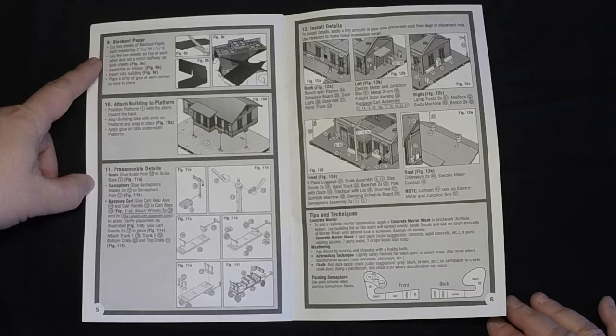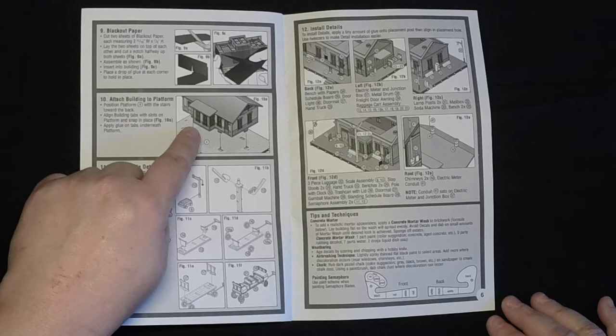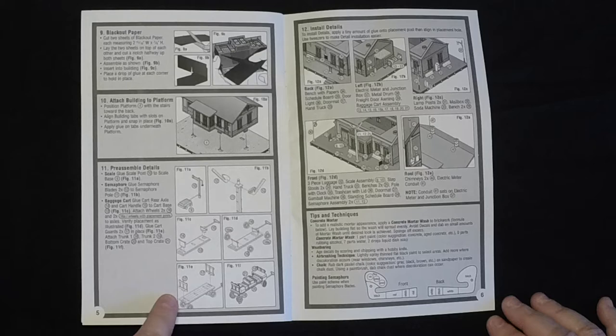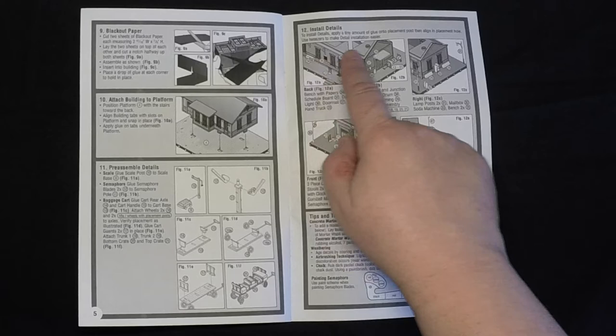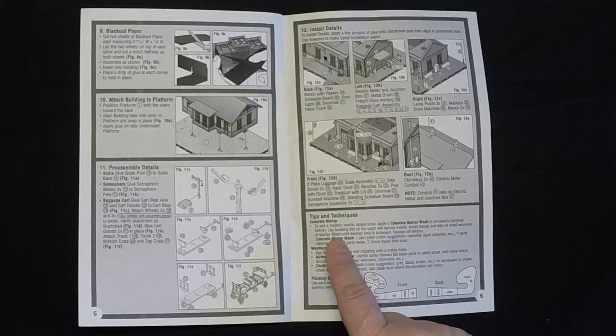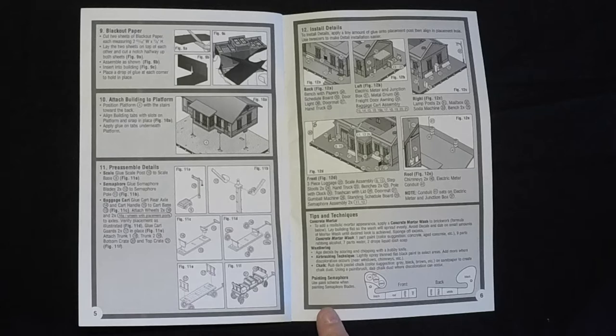It continues with the building of the station, attaching it to the platform, and then putting together some of these little accessories I talked about, like the luggage cart and the semaphore. Then they finish it off with some illustrations of where all the little detail parts go, and finally, some tips and techniques on painting and weathering. Again, pretty basic stuff, but if you're new to the hobby, that's going to be good to know.